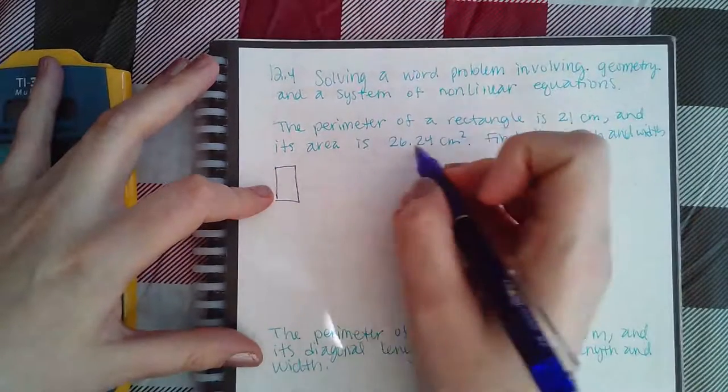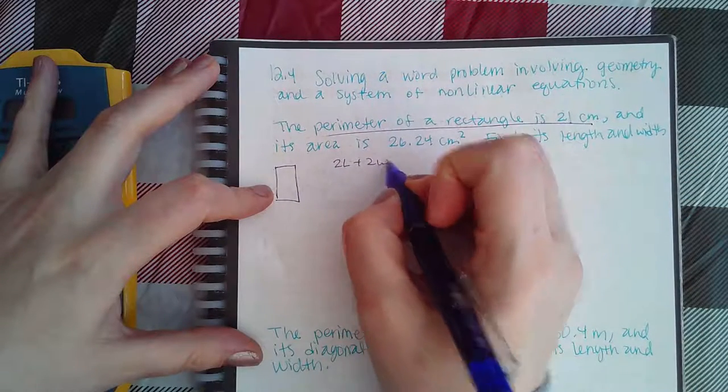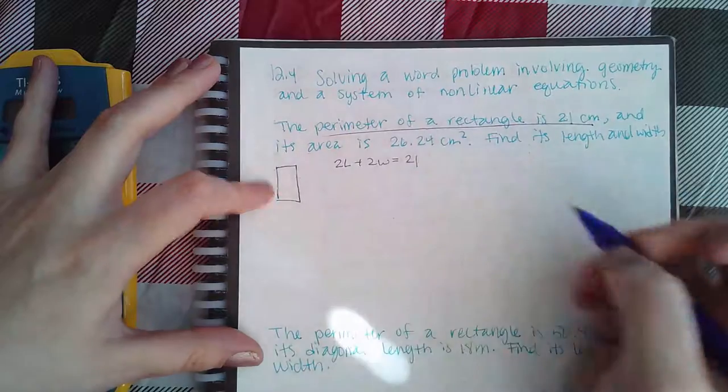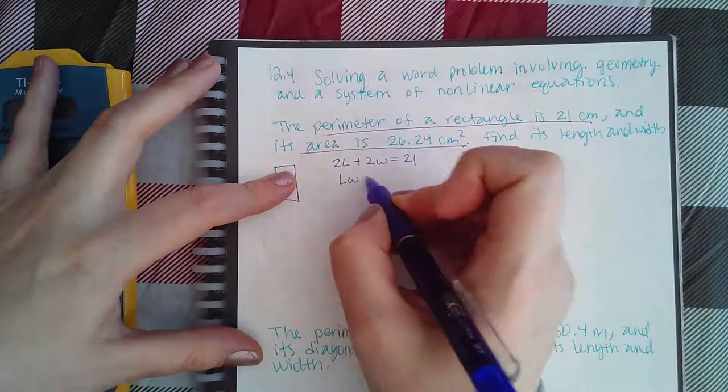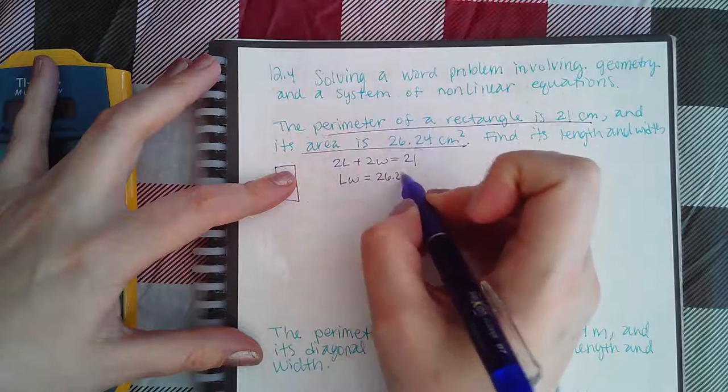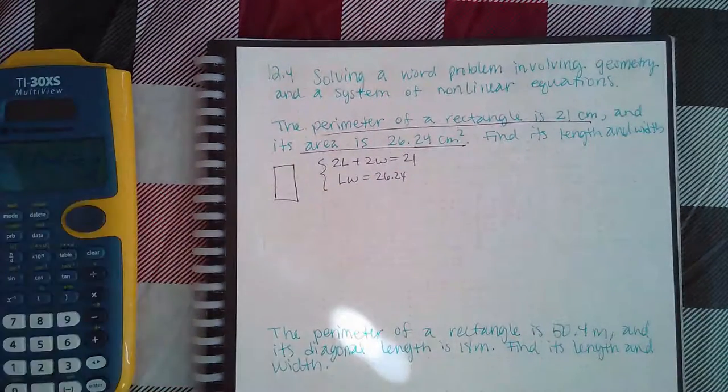Basically you have two equations: one equation for the perimeter, so 2L plus 2W equals 21, but then you have another equation for the area where length times width equals 26.24. This is the system.